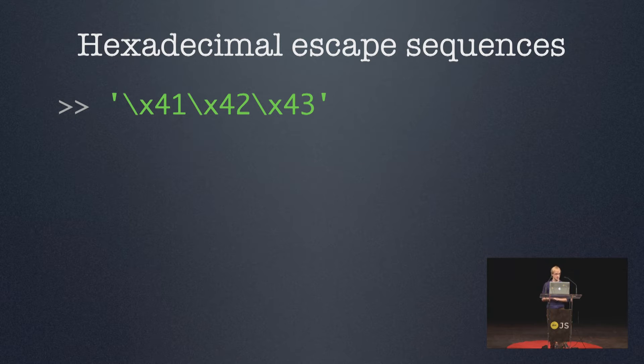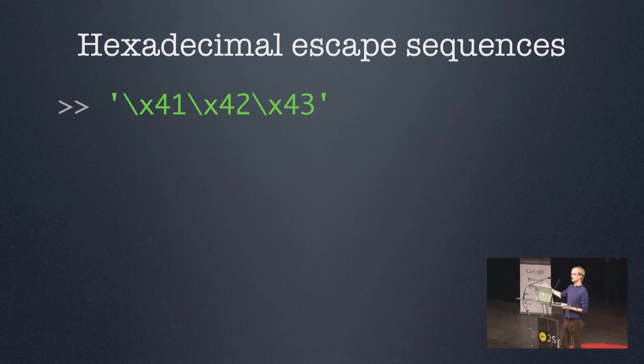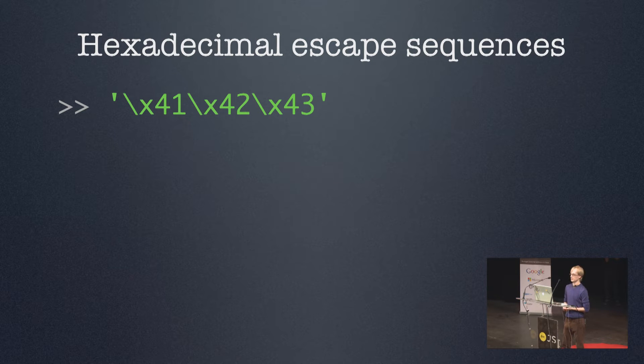Now that we have a basic understanding of Unicode, you'll see that a lot of things in JavaScript are more obvious. Like, for example, hexadecimal escape sequences. You've probably seen this before — inside of a string, you can have a backslash followed by an X character and then two hexadecimal digits. Now that you know what code points are, you know what those hexadecimal digits refer to — they're simply code points being referred to. For example, backslash X41 refers to code point U+0041, which stands for the Latin capital letter A.